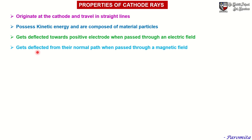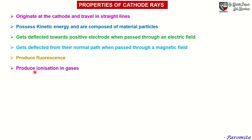Cathode rays get deflected from their normal path when passed through a magnetic field. The effect of the magnetic field on cathode rays further supports the fact that these are composed of charged particles. Cathode rays also produce fluorescence when they strike the glass wall of the discharge tube. Additionally, cathode rays produce ionization in gases — this property supports the view that cathode rays possess kinetic energy and are composed of material particles.